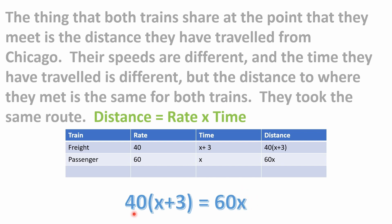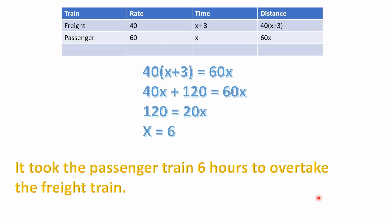From here we solve for x, which represents the time the passenger train took to reach the overtaking point. Expanding: 40 times x is 40x, and 40 times 3 is 120, so the left side becomes 40x + 120. The right side remains 60x. So our equation is 40x + 120 = 60x.